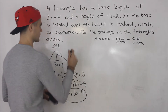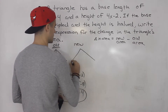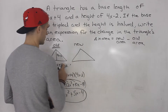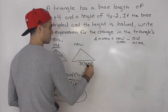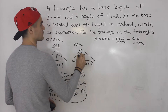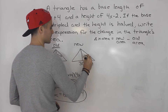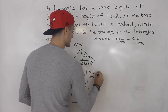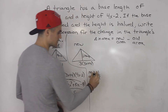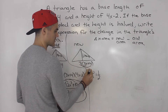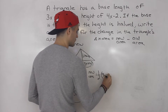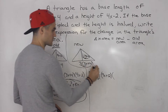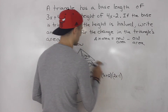Now for the new triangle, we're tripling the base and halving the height. The new base is 3 times (3x plus 4), and distributing gives us 9x plus 12. The new height is one half times (4x minus 2); distributing gives us 2x minus 1. So the new area is one half times (9x plus 12) times (2x minus 1).